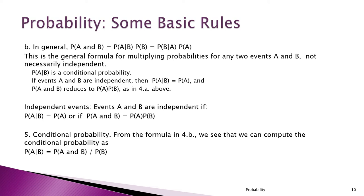It all depends on what you have and what you're trying to compute. The probability of A given B is a conditional probability. If the two events are independent, the probability of A given B is just the probability of A, and so the general multiplication formula turns into the probability of A times the probability of B — exactly what we had before for independent events.